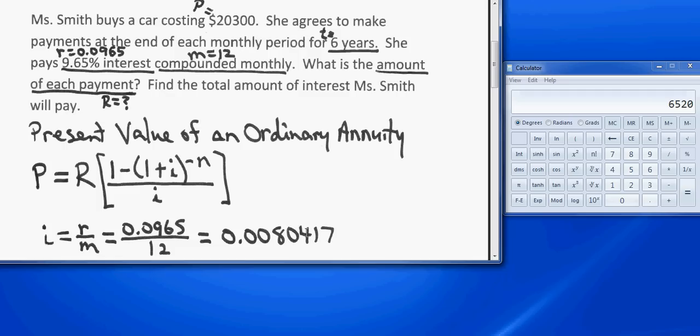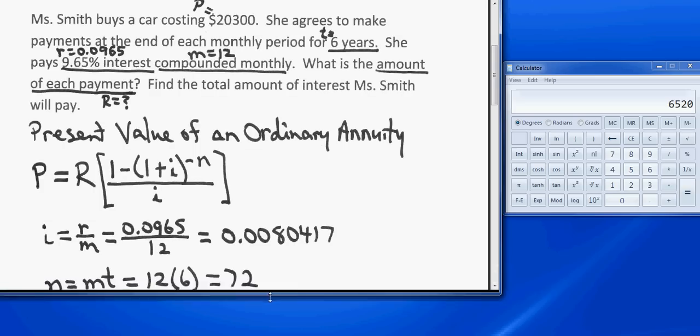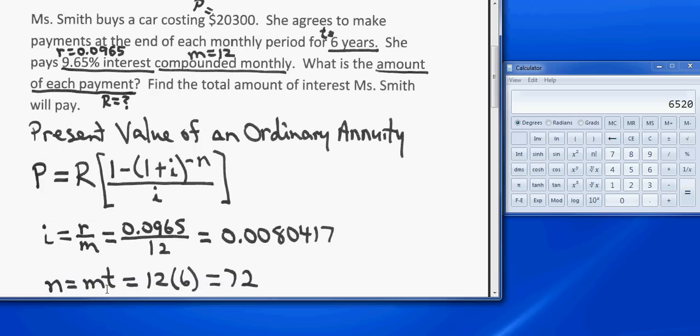I rounded off, but I used lots of decimal places because the larger these numbers get, the more decimal places you need in your answer. Since the calculator is doing all the hard work, carry lots of decimal places, and that way you'll assure yourself of being correct to the nearest cent when you finally do round off. And n is m times t, which would be 12 times 6, which is 72.